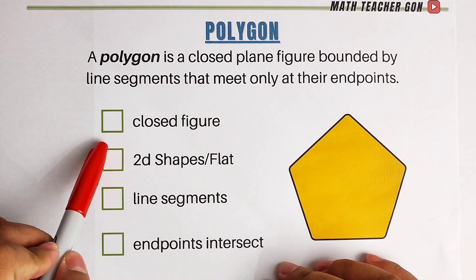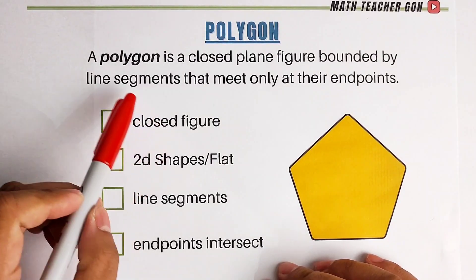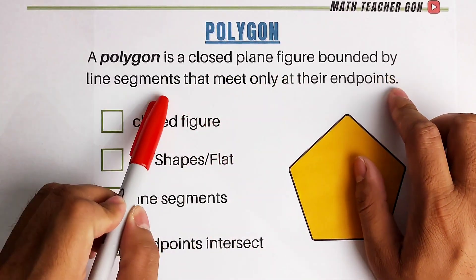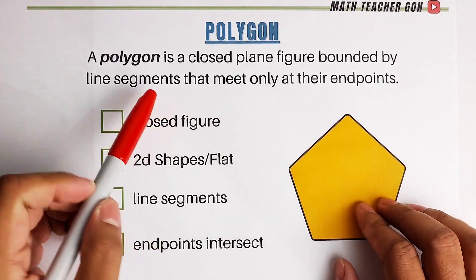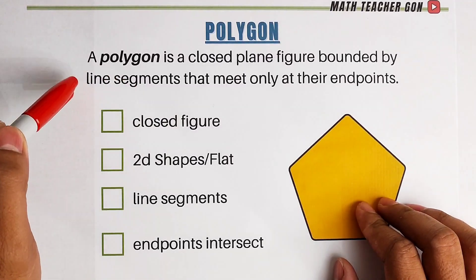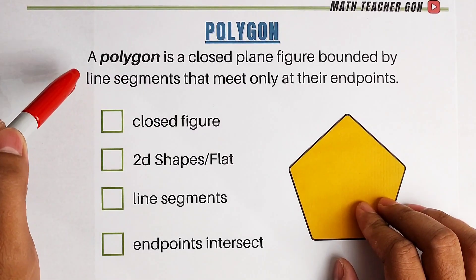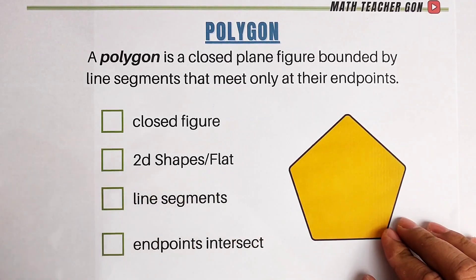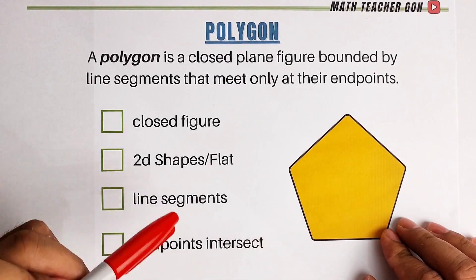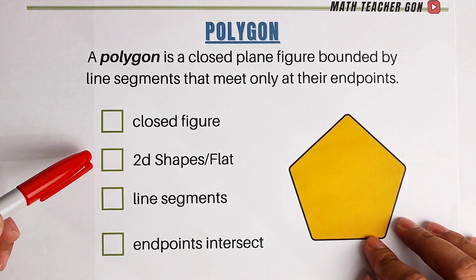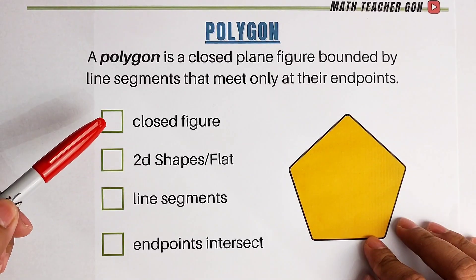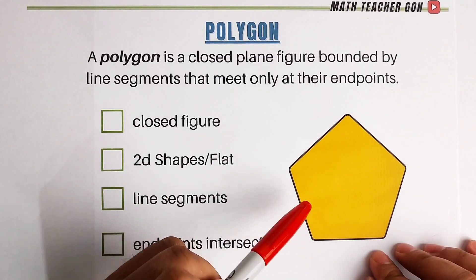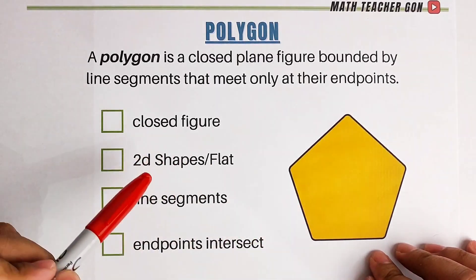First, let us define what is a Polygon. A Polygon is a closed plane figure bounded by line segments that meet only at their endpoints. So basically, this is the definition of a Polygon. But for us to determine whether the given shape or figure is a Polygon, we need to check if these characteristics are embodied by this kind of figure. So we have a checklist.